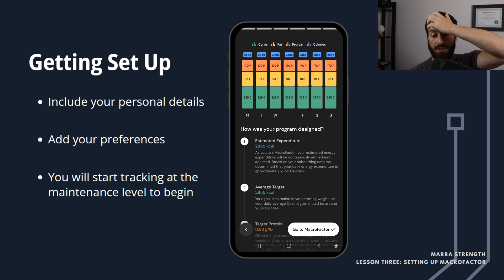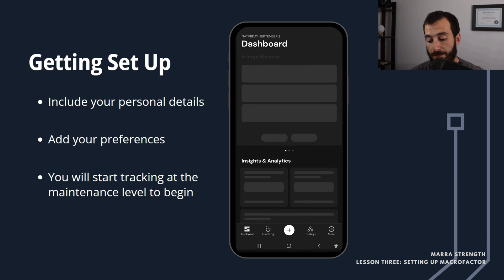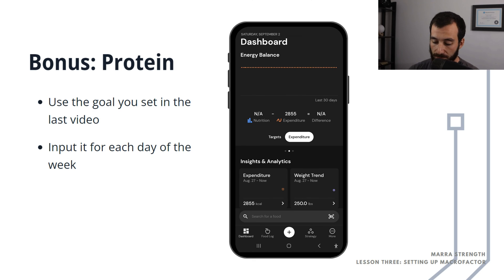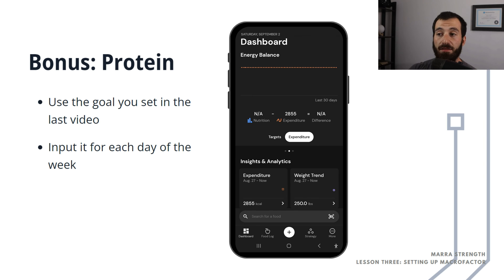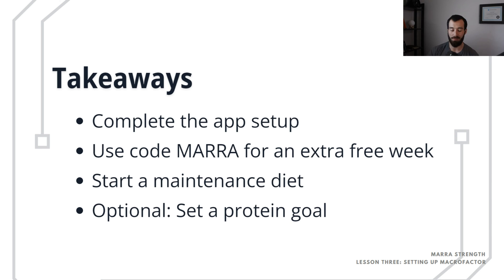And it'll set up your protein goals perfectly. Just look at that — it says 2,850 calories is my maintenance and there's my protein goal. That's an overview of what it's set my maintenance goals at. After this, here is the dashboard — this is basically where you see everything at a glance. That's all you need to know on MacroFactor right now: complete the setup, use the code for the extra week, and start a maintenance diet with a standard floor.